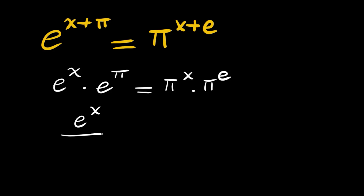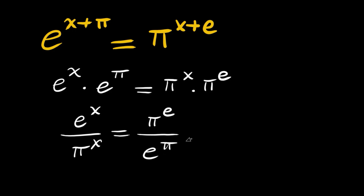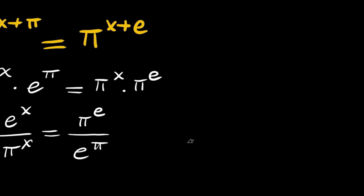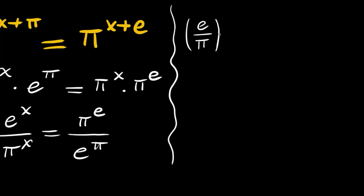From this we can say e to the x divided by pi to the x is equal to pi to the e divided by e to the pi. The left hand side can also be written as e divided by pi, raised to the power x, equals pi to the e divided by e to the pi.